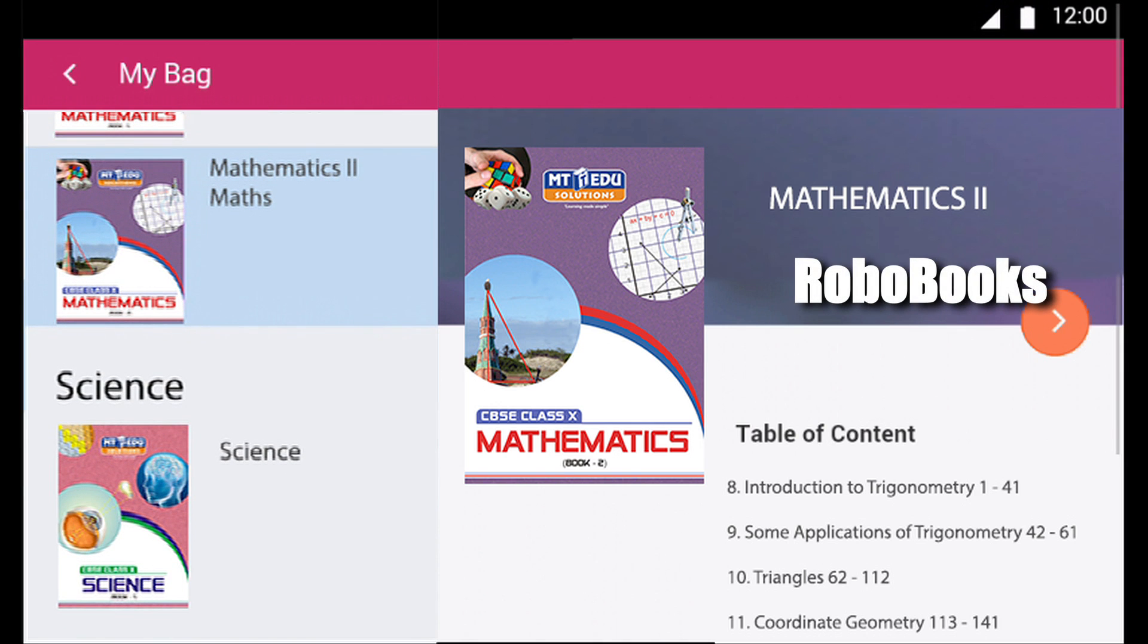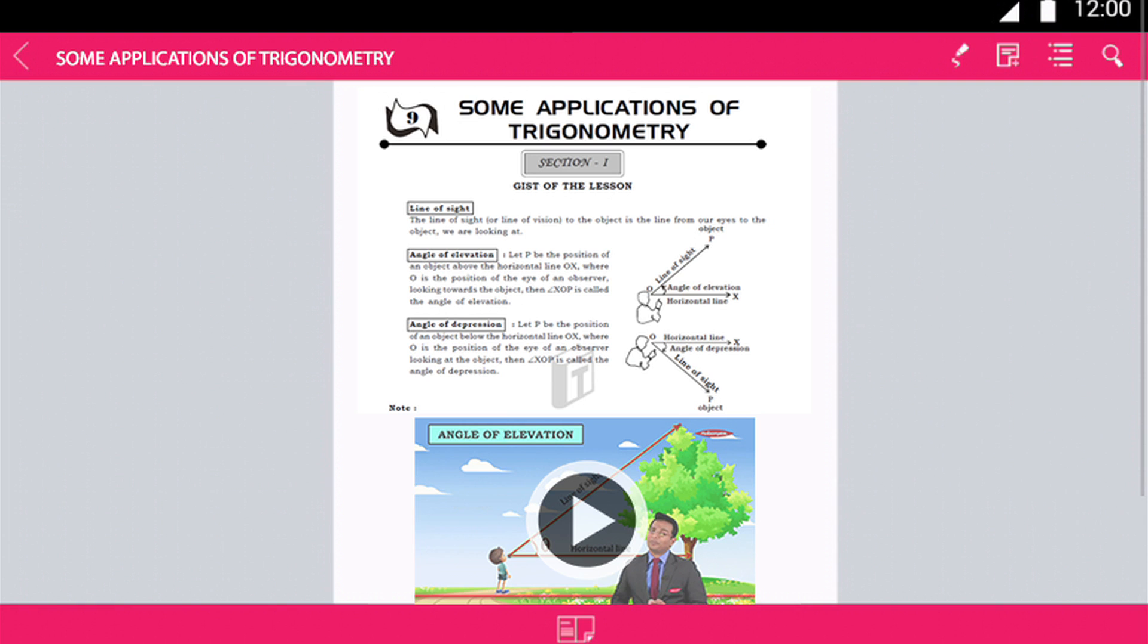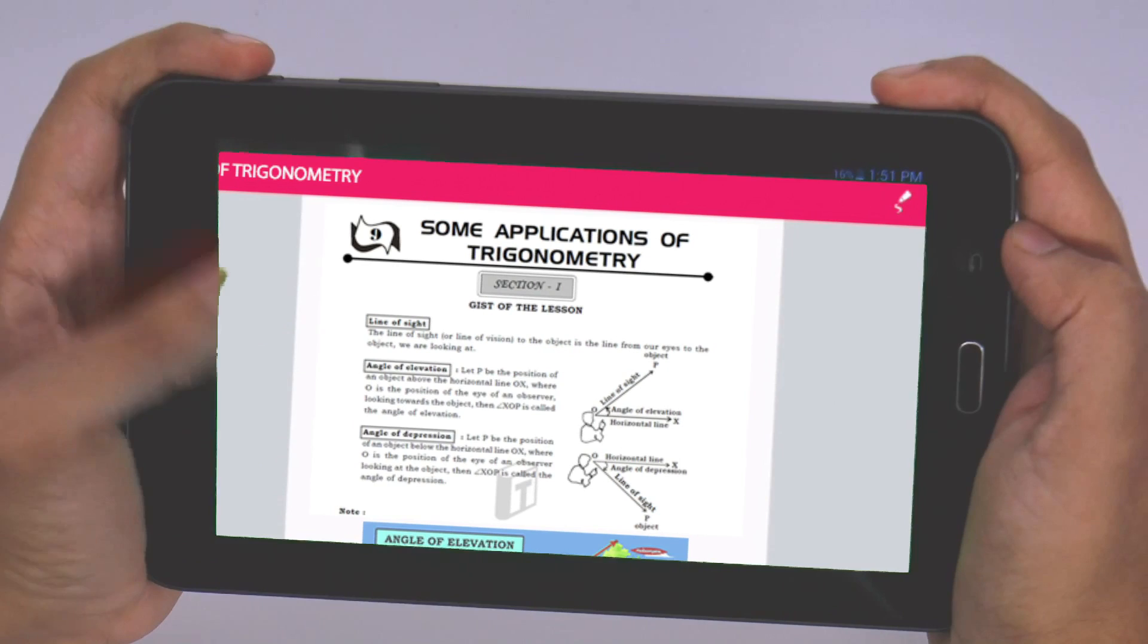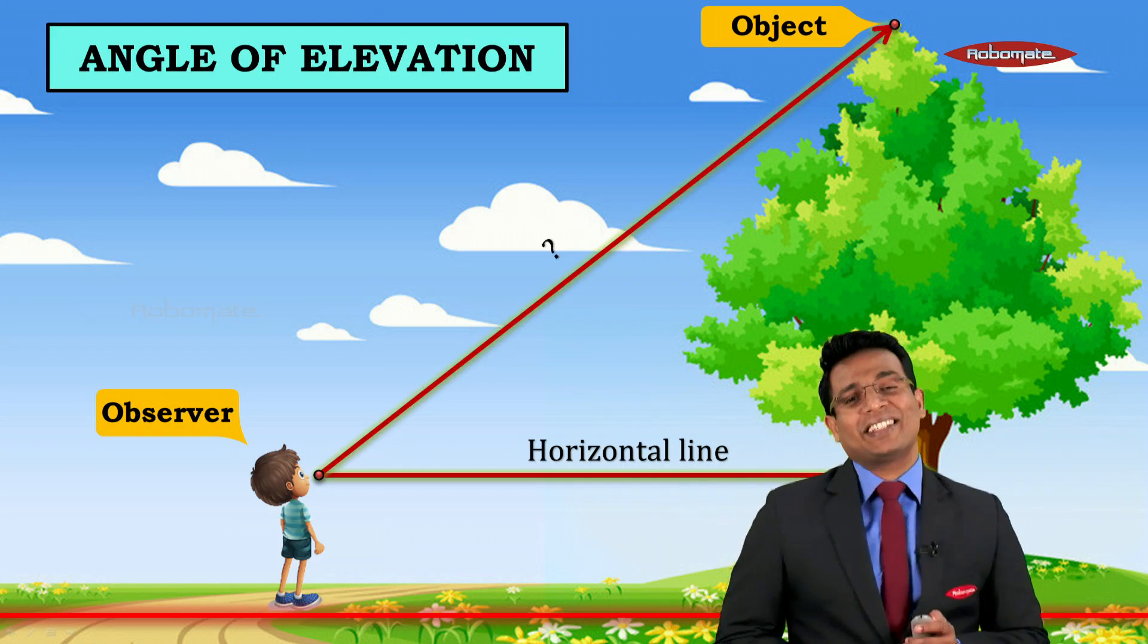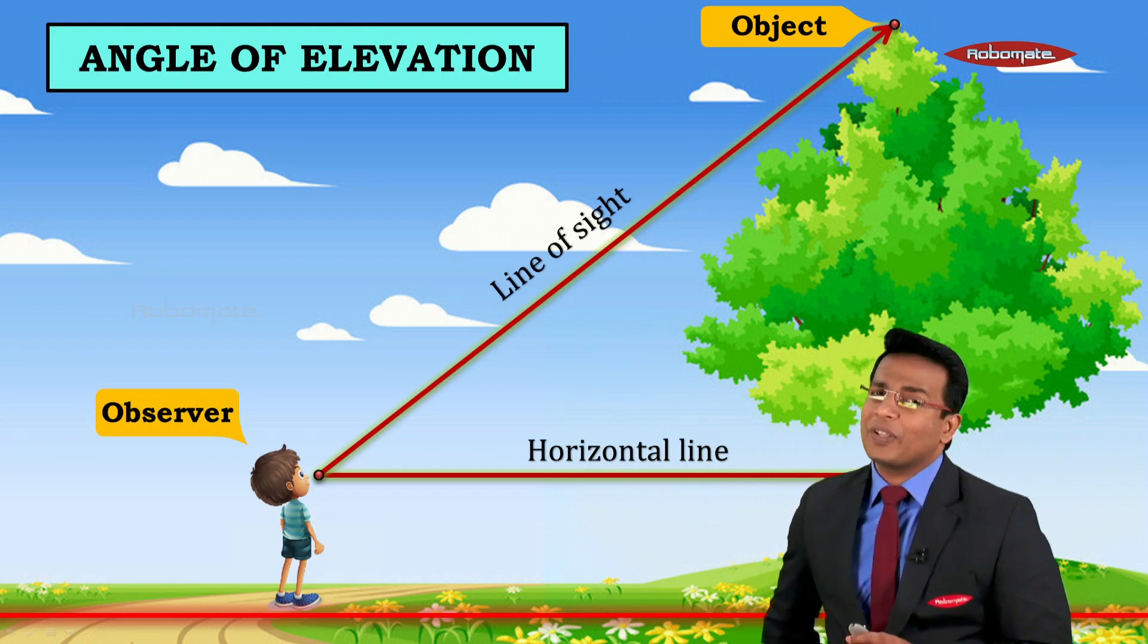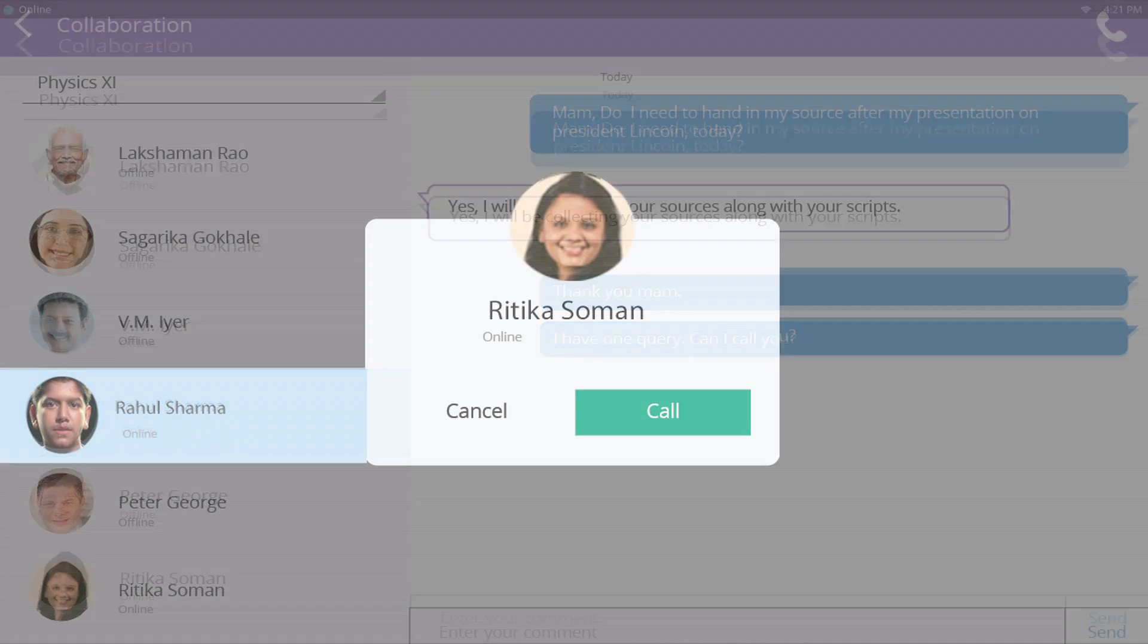I opened the math book and tried reading 'angle of elevation.' It puzzled me, so I clicked on it and immediately received four web links with additional information, including audio video lectures. The next tab was 'Collaboration,' where I could chat with teachers for my difficulties.